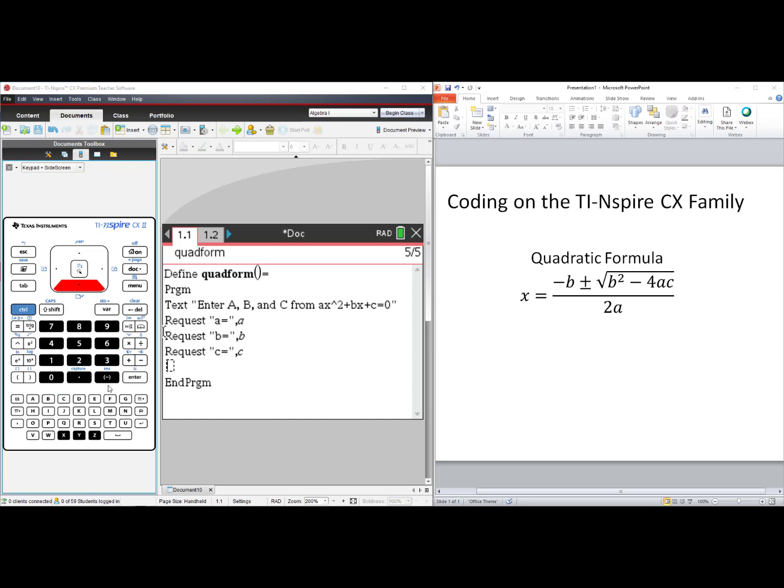We are now ready to enter our quadratic formula. Press Ctrl-Divide for our fraction template. Enter in negative B plus the square root of B² minus 4 times A times C, all over 2 times A. Right arrow to get out of the denominator. Store, Ctrl-Var, this solution into a variable we've yet to use. I'll choose D. Press Enter.